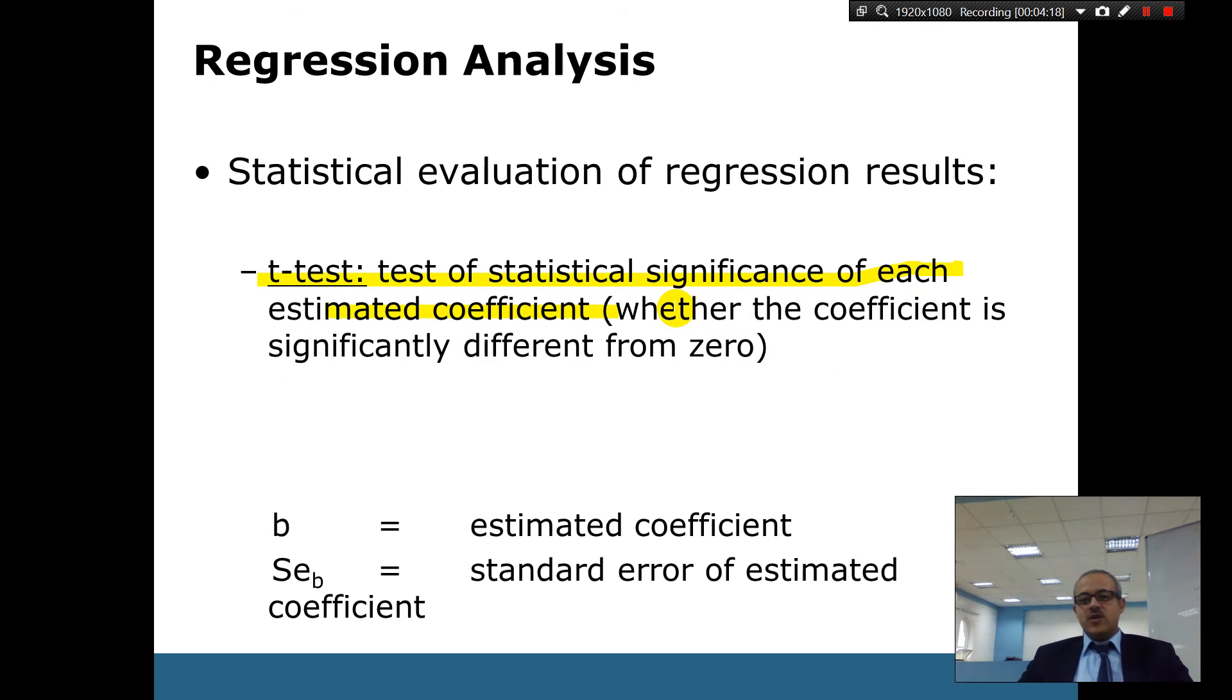So whether the coefficient is significantly different from zero. So B is the estimated coefficient, and we have SE, which is the standard error. And then this is how you calculate the t. You get the B estimated divided by standard error.